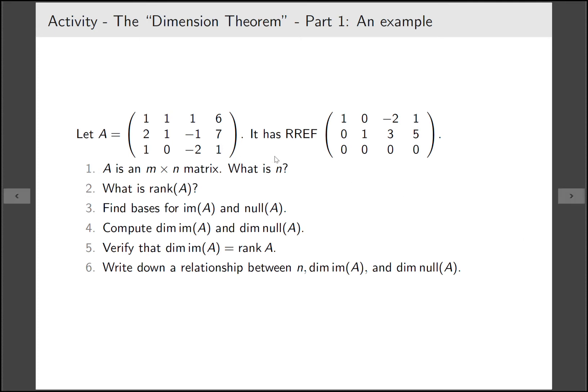So for this matrix A we're telling you that its reduced row echelon form is this. If A is an m by n matrix what is n? m is the number of rows and n is the number of columns, so the answer is 4. What's the rank? It has two leading ones so the rank is 2.